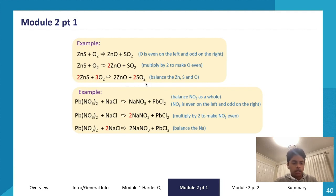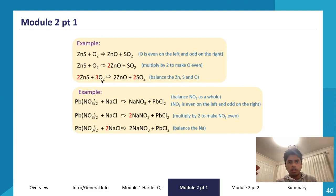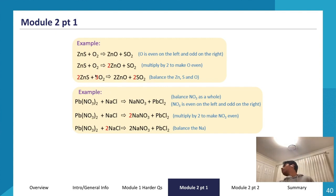With 2ZnS, I have 2 sulfates on the left, so I put a 2 in front of SO2 to get 2 sulfates on the right. Now for oxygen: I have 2 from 2ZnO and 4 from 2SO2, giving 6 oxygens on the right. So I put a 3 in front of O2 to get 6 oxygens on the left. The final balanced equation is: 2ZnS + 3O2 → 2ZnO + 2SO2.